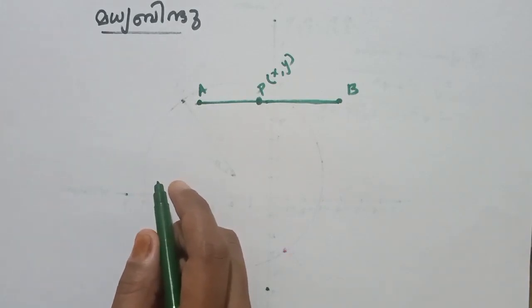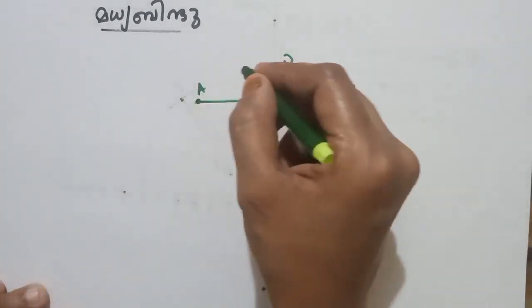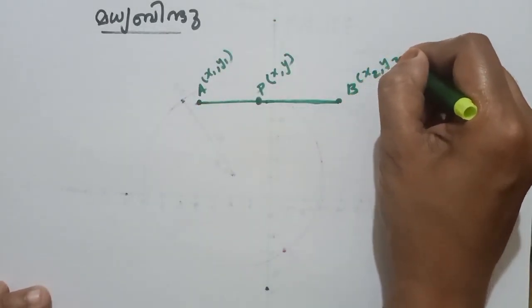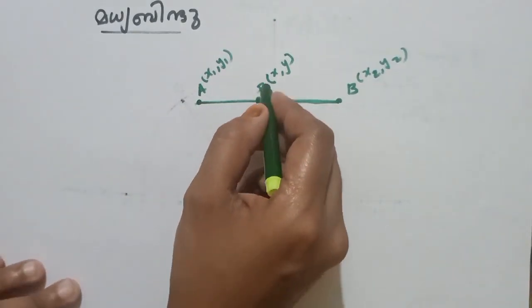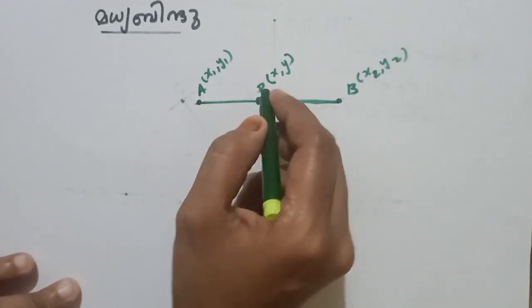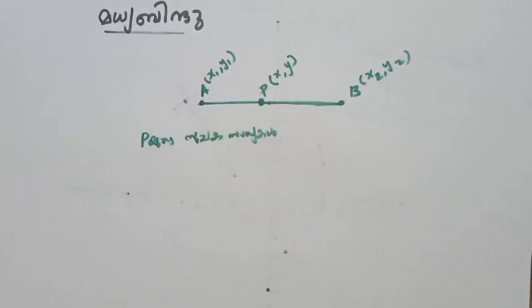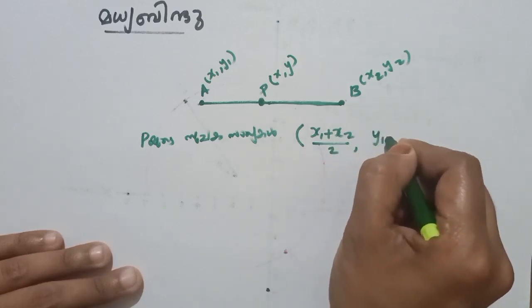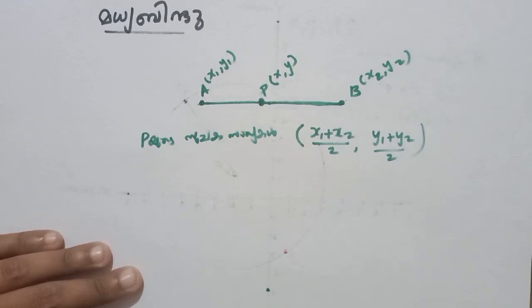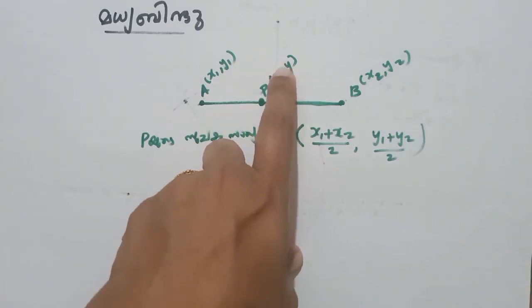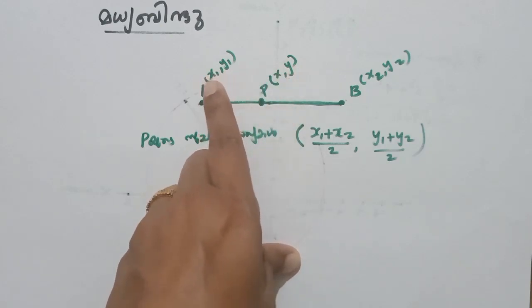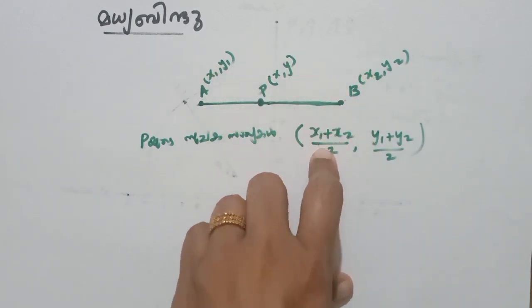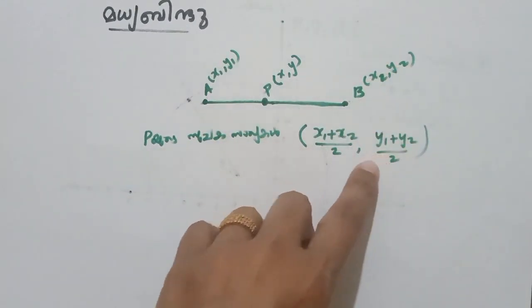Look, we can see here x1, y1 and then x2, y2. Then x1 plus x2 by 2, y1 plus y2. That means this is the midpoint.